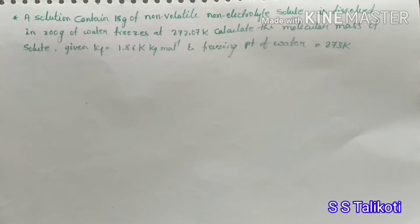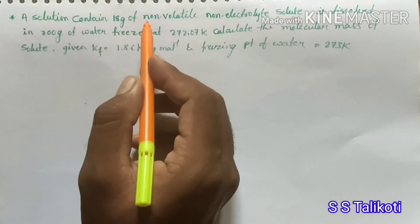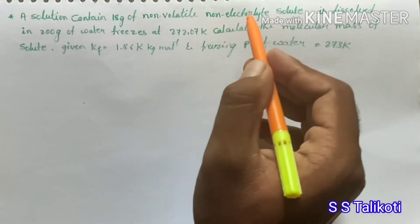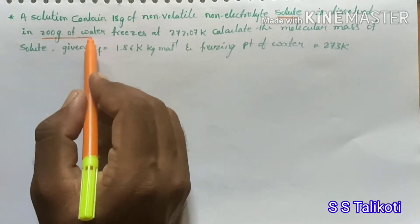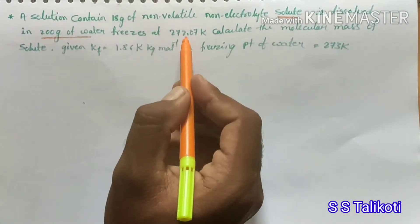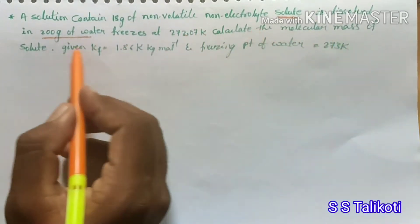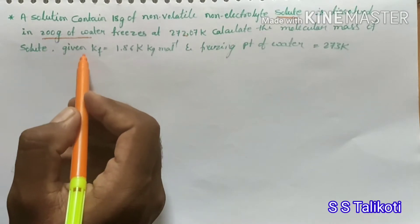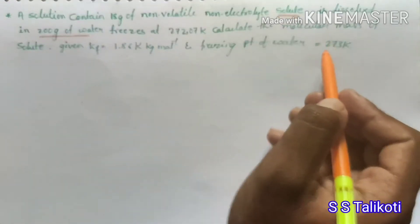We will go for the next problems and solutions in the Solutions chapter. Read the first question: a solution containing 18 gram of non-volatile, non-electrolyte solute is dissolved in 200 gram of water. The solution freezes at 272.07 kelvin. Calculate the molar mass of this solute. Given: kf = 1.86 kelvin·kg per mole, and the freezing point of pure water is 273 kelvin.